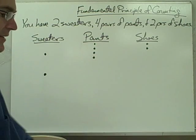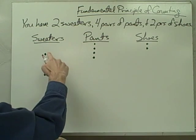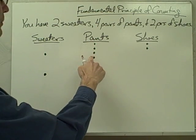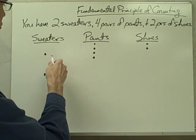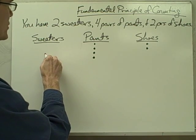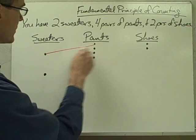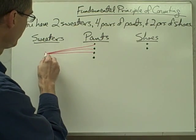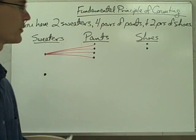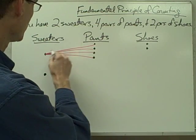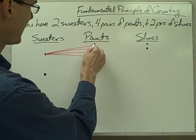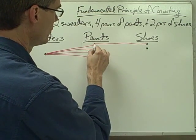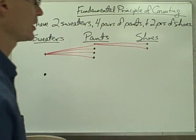If I draw a little diagram here, each of these dots represents my two sweaters. I've got four pairs of pants and two pairs of shoes. If I take this one sweater, I could match it up with one of four different pairs of pants, and then each sweater-pants combination I could match up with that pair of shoes or that pair of shoes.